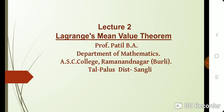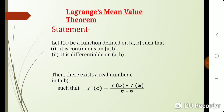Lagrange's Mean Value Theorem is one of the most important theoretical tools in calculus. It states that if f(x) is defined and continuous on the closed interval [a,b] and differentiable on open interval (a,b), then there is at least one number c in the open interval (a,b) such that f'(c) is equal to f(b) minus f(a) divided by b minus a.